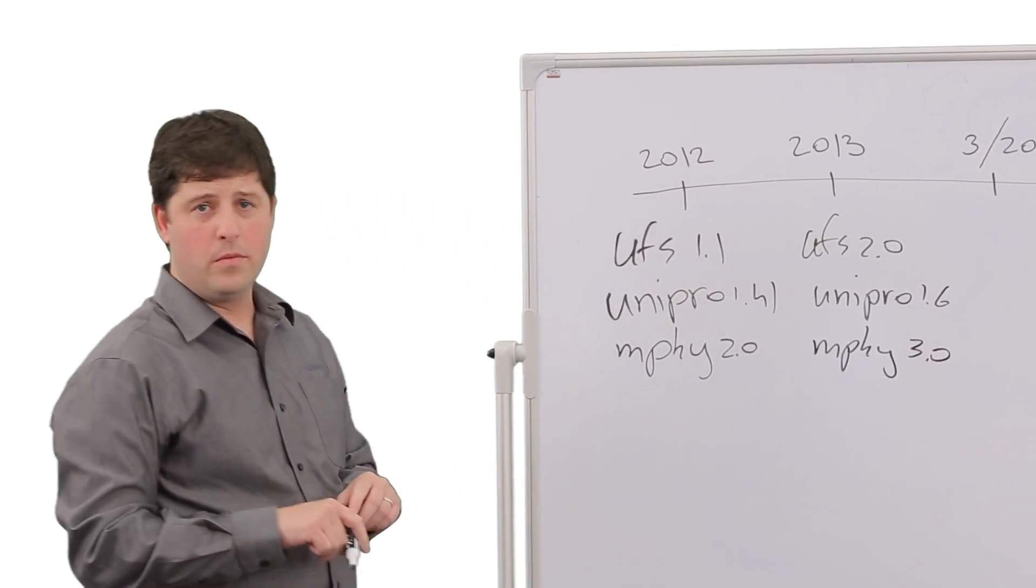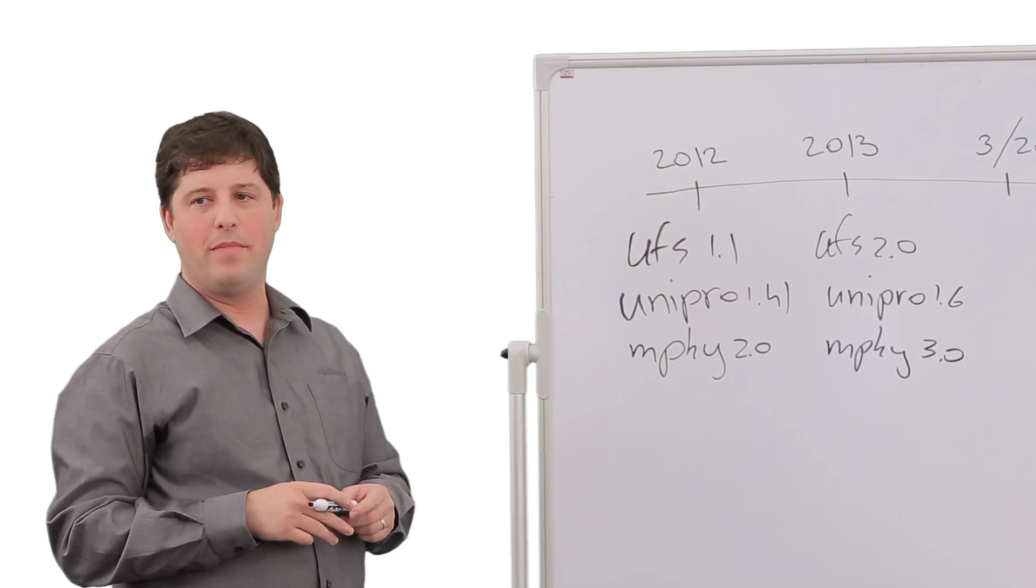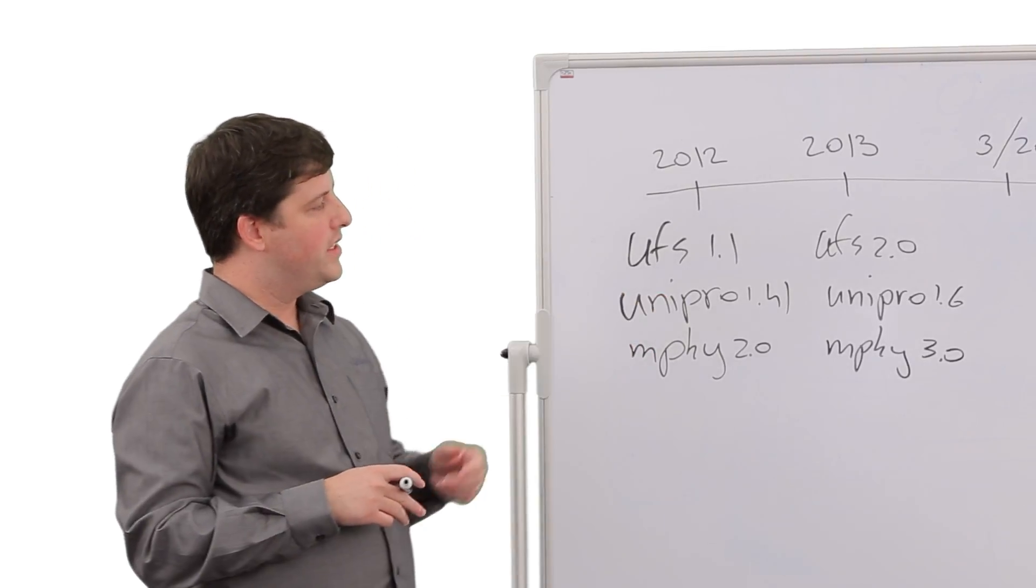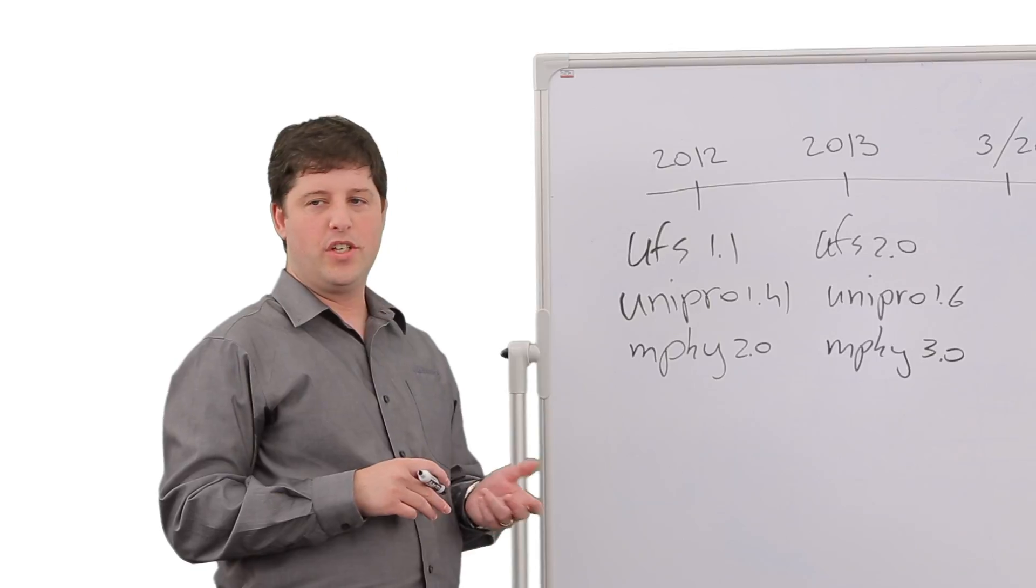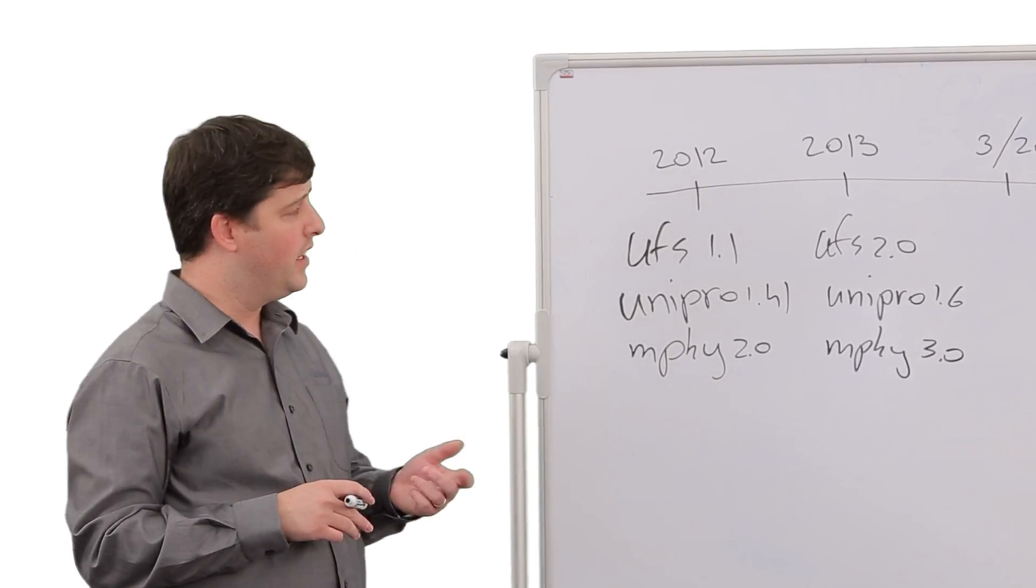UFS 2.0 improved and increased the bandwidth and introduced security features. By using Unipro 1.6 and Mphi 3.0, it offered transmission of up to 11.5 gigabit per second using two lanes.